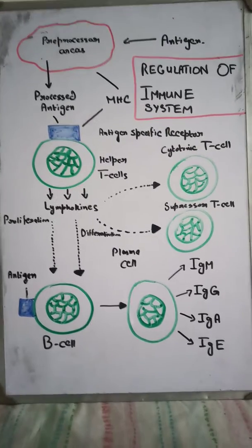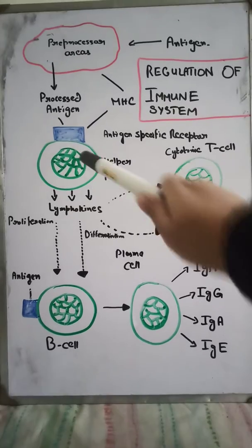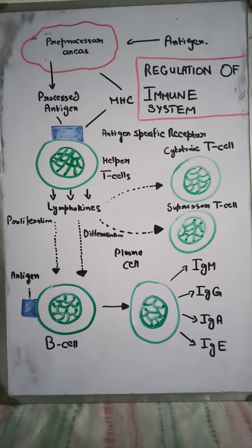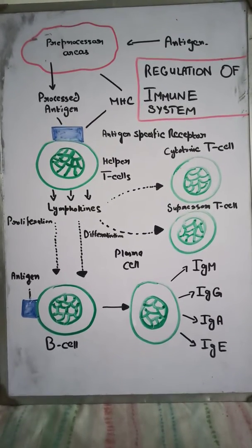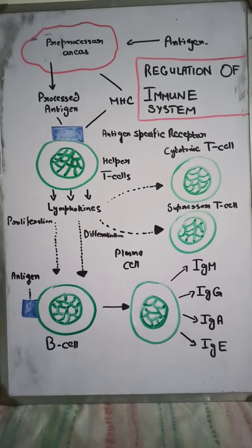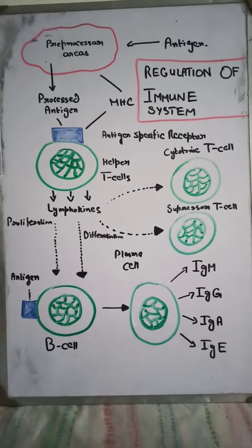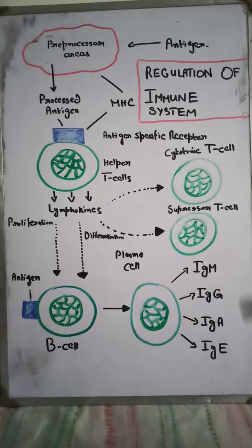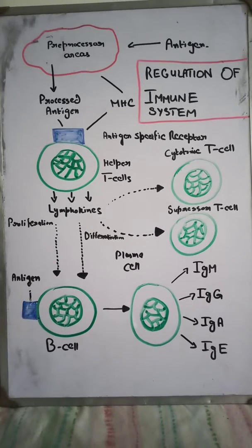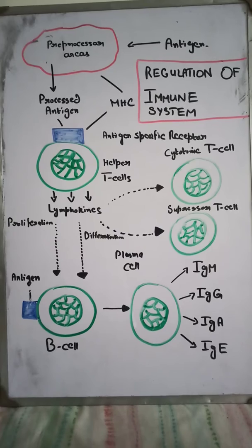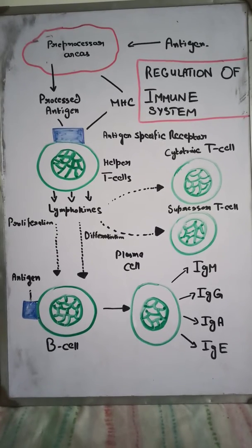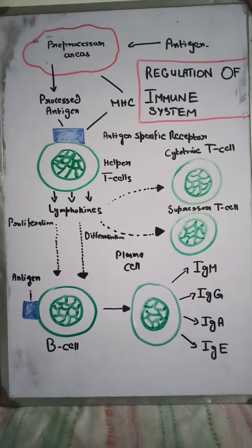When the antigen binds, it releases lymphokines which attract other B-cells. The B-cells can also bind with the antigen and further differentiate into plasma cells. The plasma cells then release specific antibodies, which are IgM, IgG, IgA, and IgE, each having their own importance.